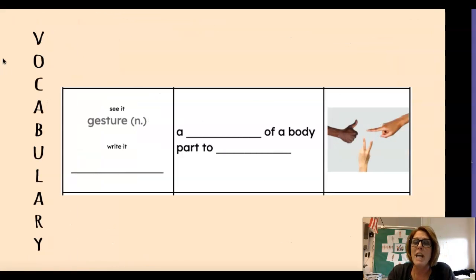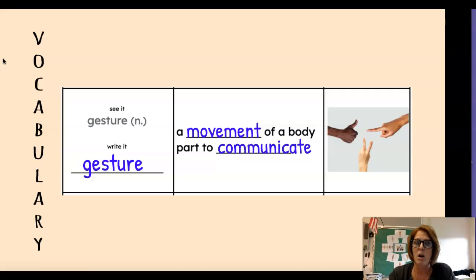Next we have gesture. This is a noun. Say it with me gesture. Here the g makes a j sound at the beginning of the word. Gesture is a movement of a body part to communicate. This makes me think of sign language using our hands to talk.